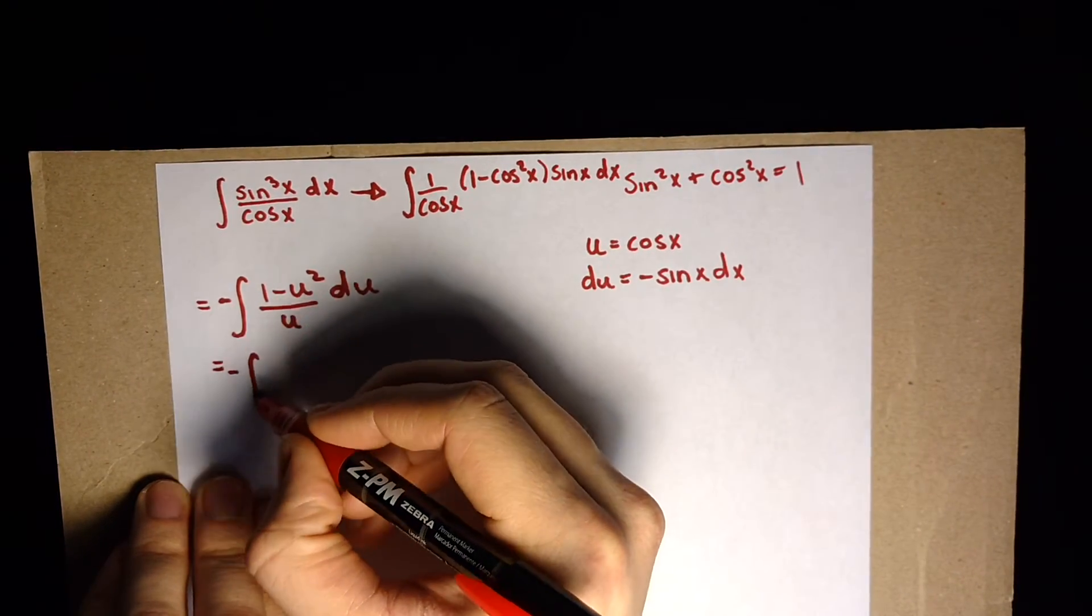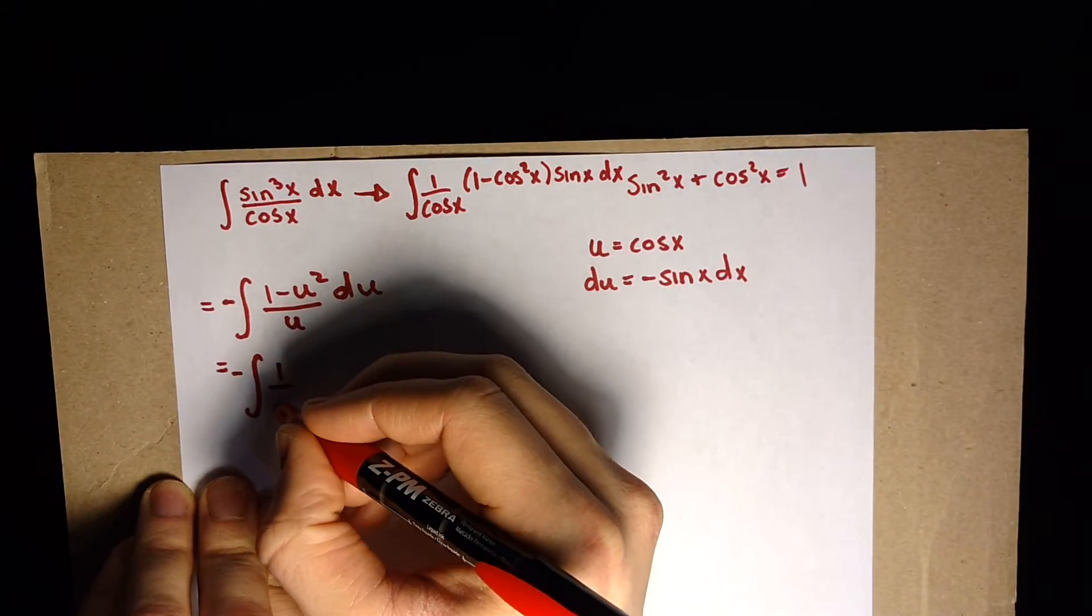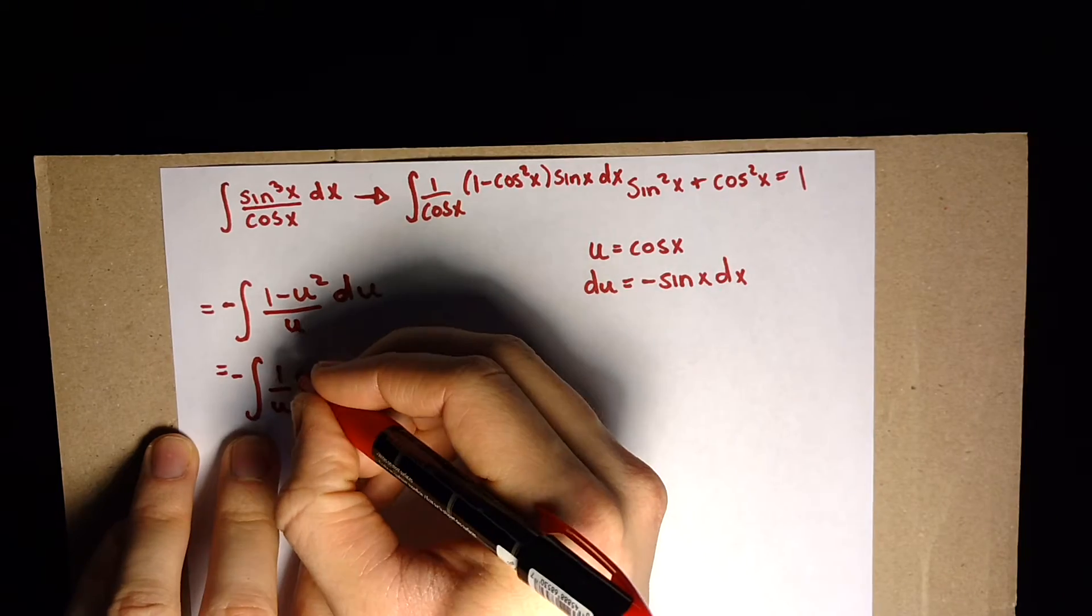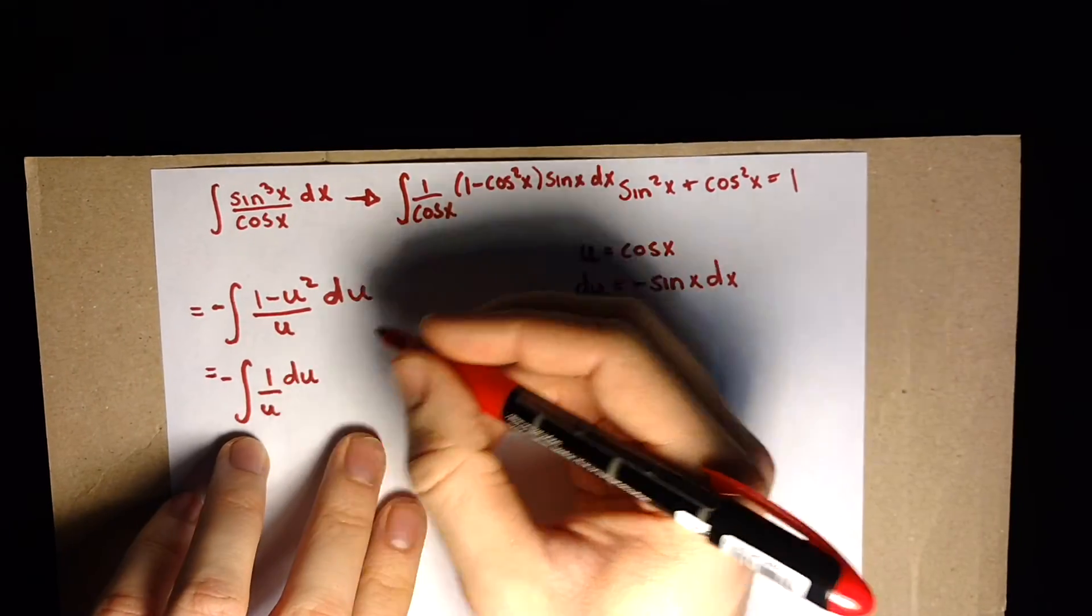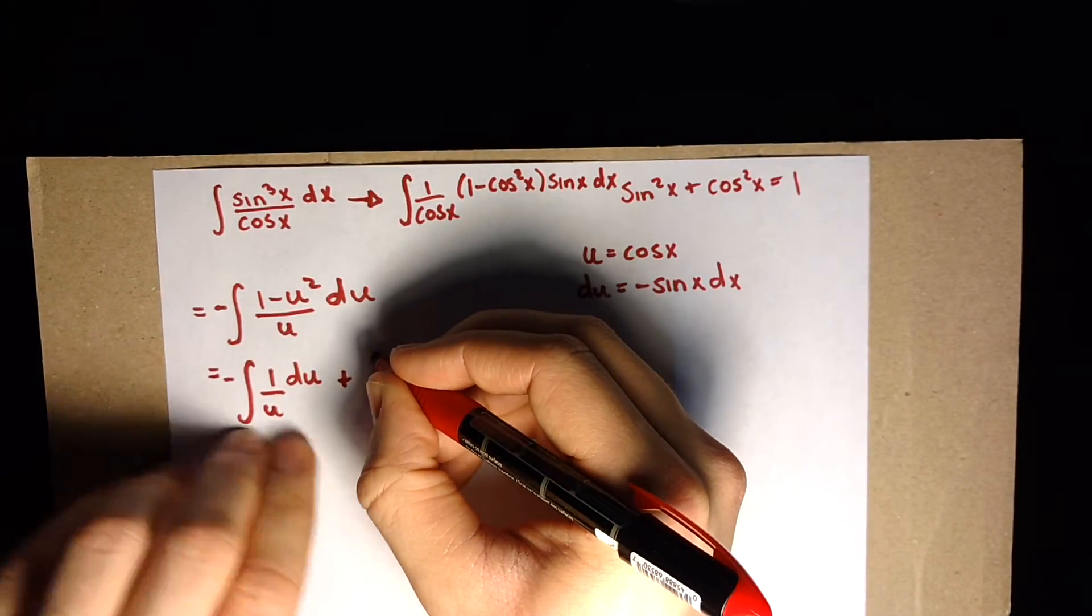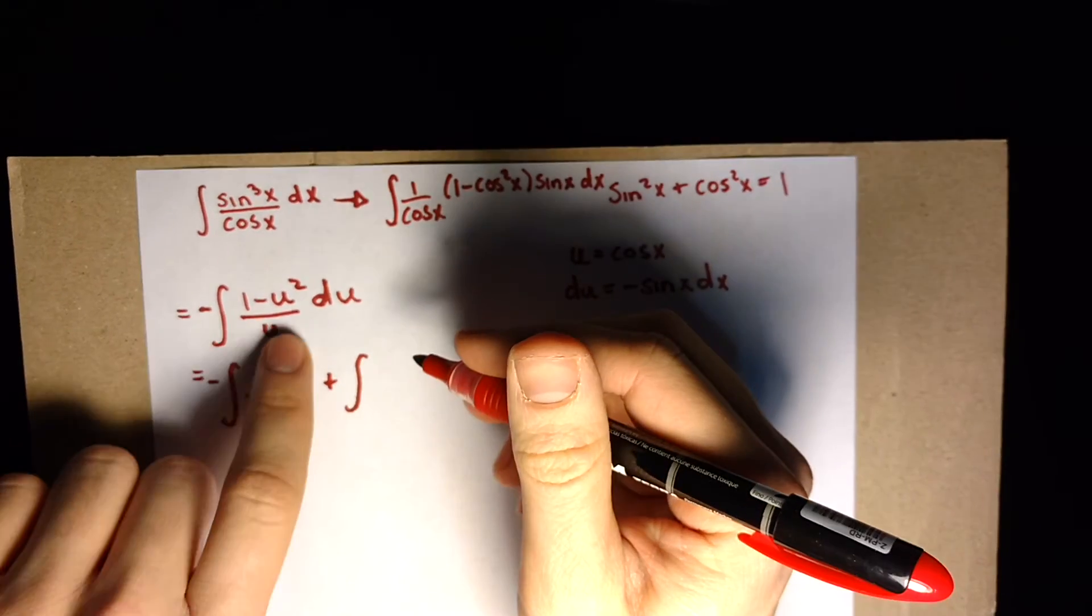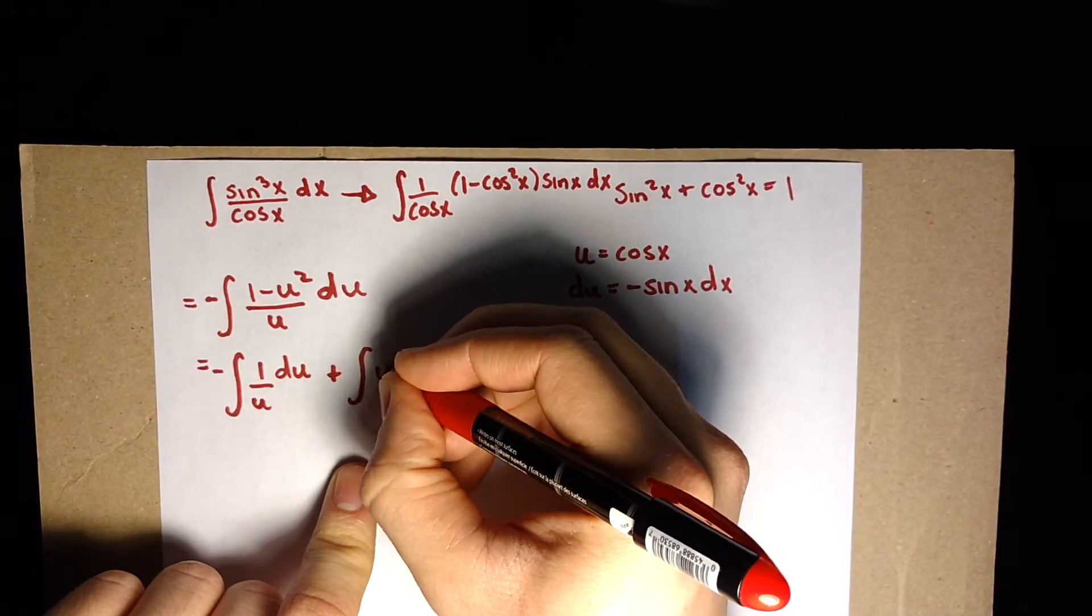Which is negative integral of 1 over u du plus, minus minus makes a plus, integral of u squared over u, which is just u du.